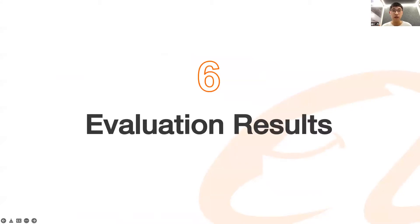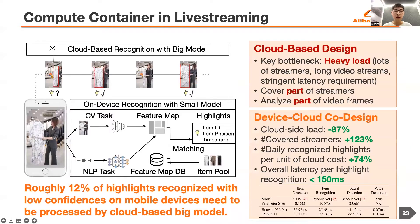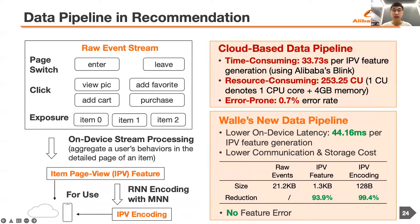Let's get into the evaluation part. I first show the practical performance in major e-commerce scenarios of Alibaba. First is the performance of the compute container for highlight recognition in Taobao's live streaming. Under the conventional cloud-based design, the cloud load is so heavy that only part of video streams and only a few sampled frames can be analyzed. To overcome the bottleneck, we offload a lightweight model to each streamer's mobile device for on-device inference. Only those video streams recognized with low confidence on the mobile device need to be processed by the cloud-side large model. By device-cloud collaboration, the cloud-side load sharply reduces while the number of covered streamers and the size of daily recognized highlights dramatically increase.